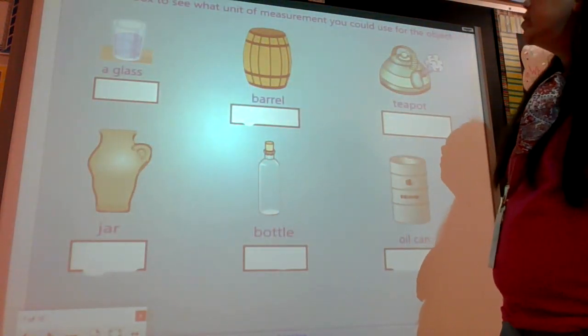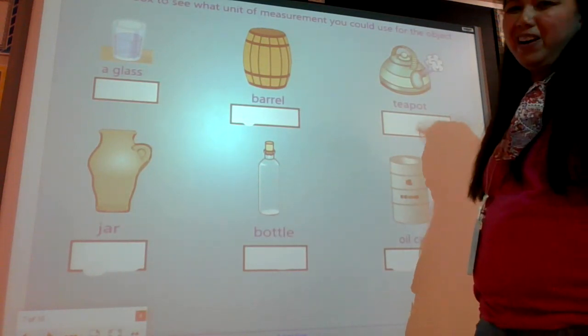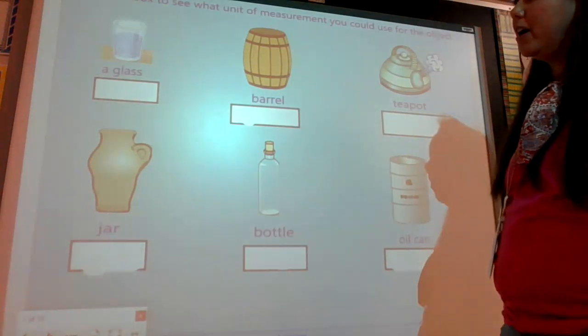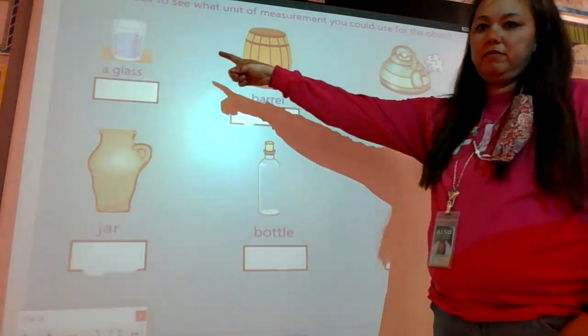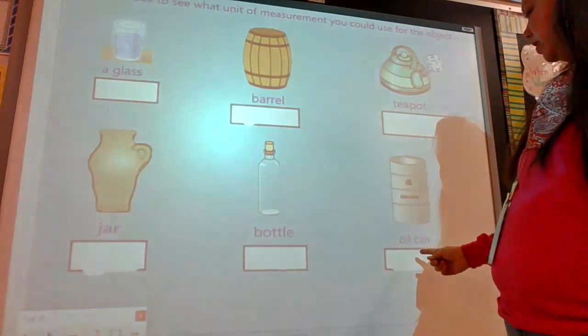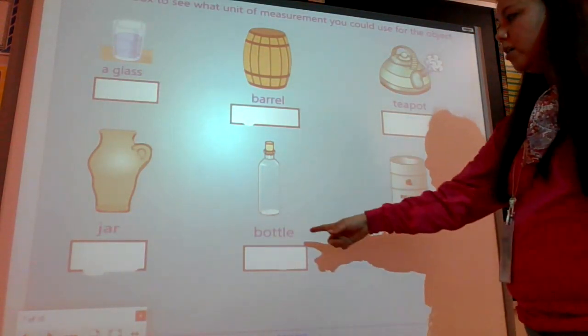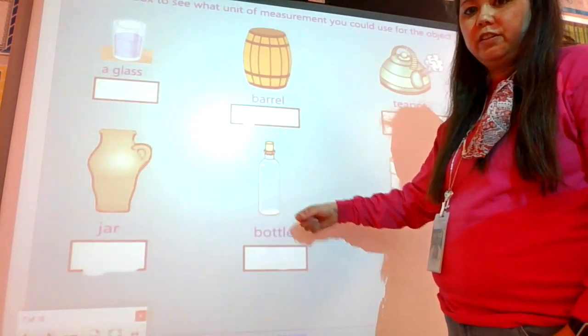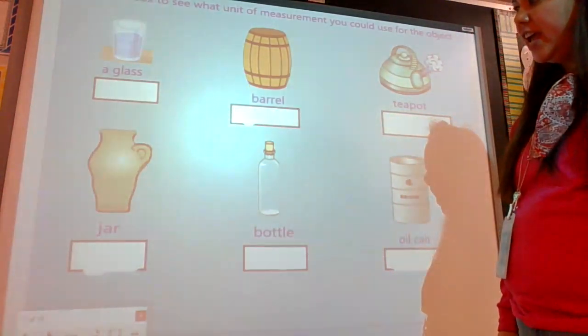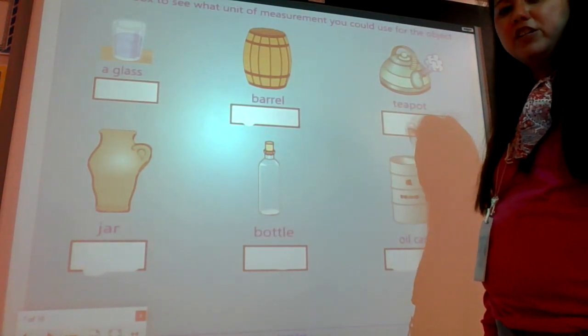We'll erase the box to see what unit of measure you could use for the object. I would like for you to pause the video and try to think about: there's a glass, a barrel, a teapot, an oil can, a bottle, and a jar. We're going to come back and talk about each one of them.